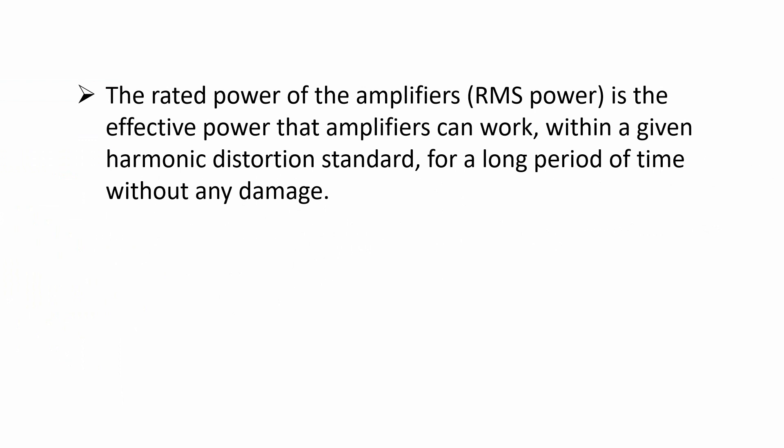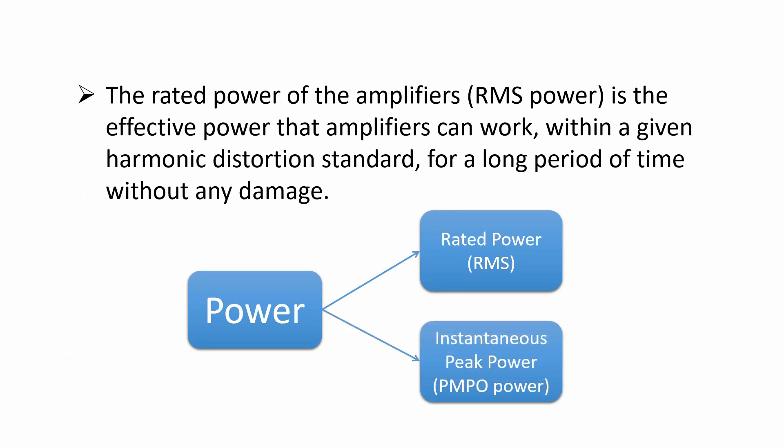The rated power of amplifiers, RMS power, is the effective power that amplifiers can work within a given harmonic distortion standard for a long period of time without any damage. According to international standards, power is marked in two ways: rated power (RMS) and instantaneous peak power (PMPO power).